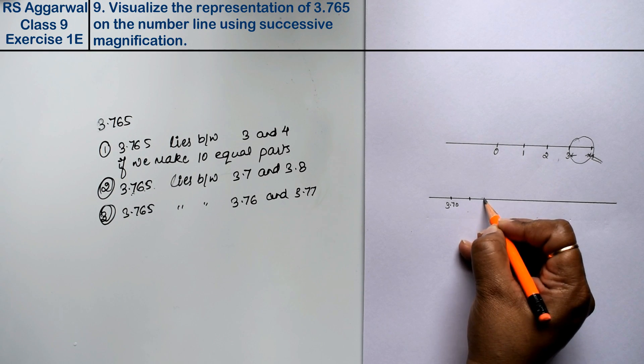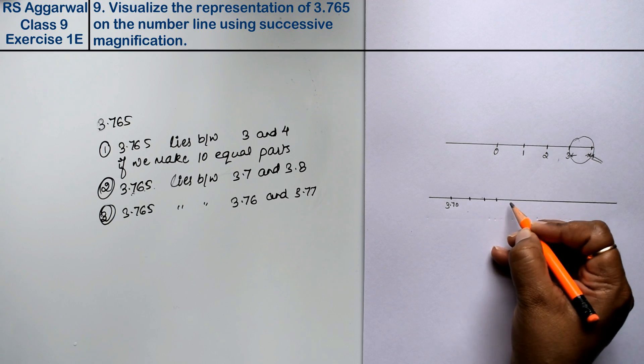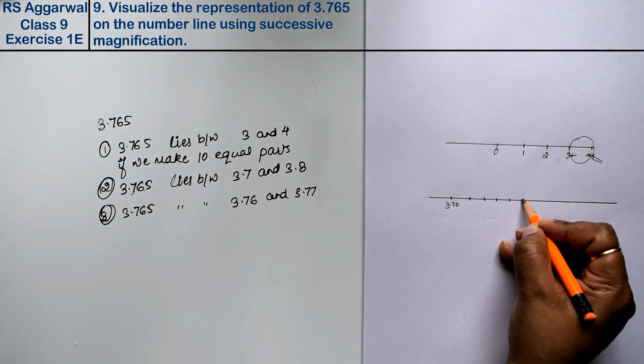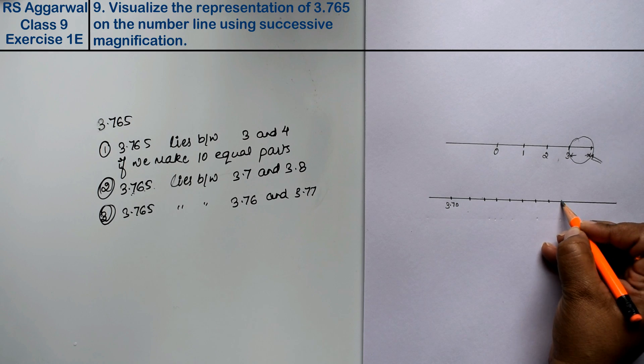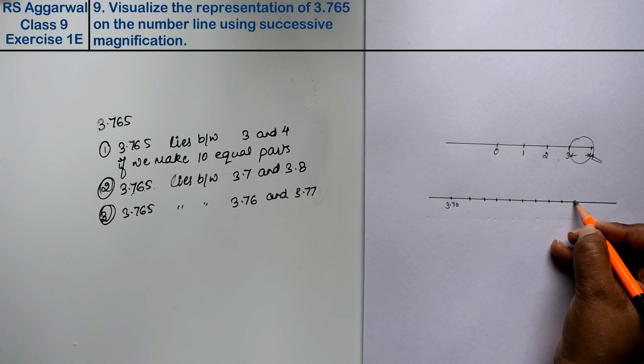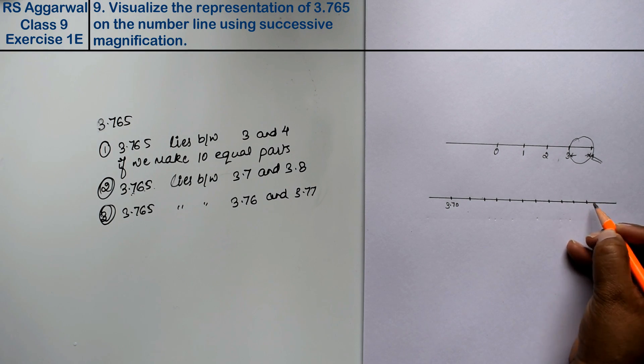So look at this, we have 10 parts: 1, 2, 3, 4, 5, 6, 7, 8, 9, and it is 3.80.